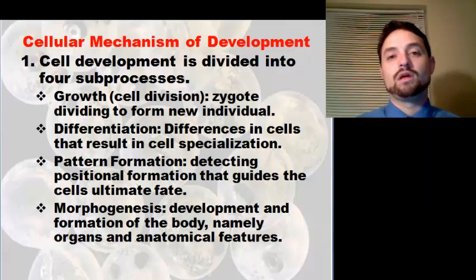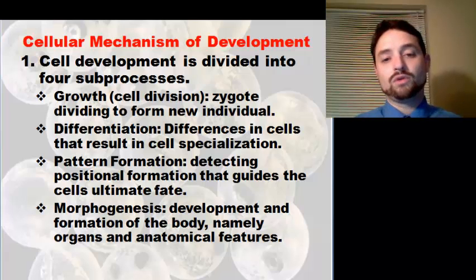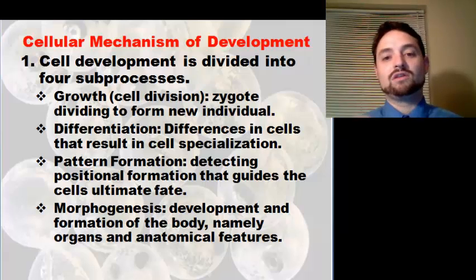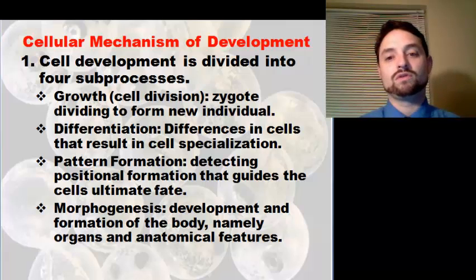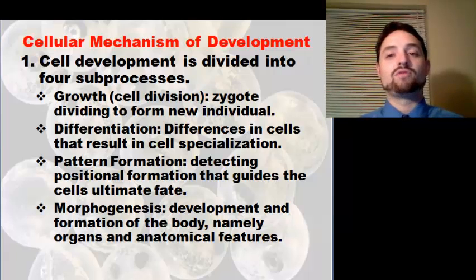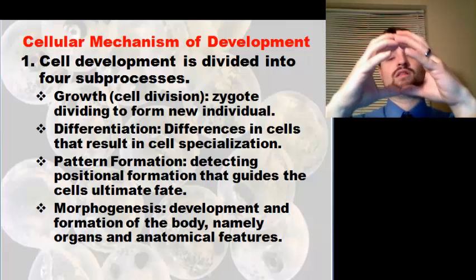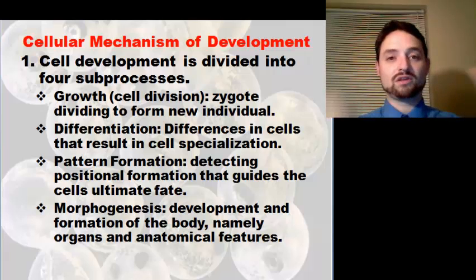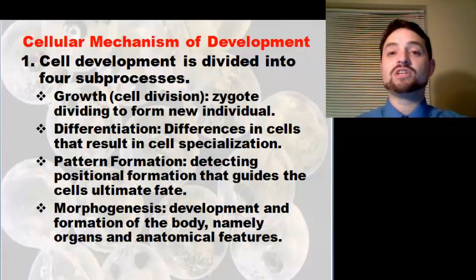Starting from that one cell, development is divided into four subprocesses. The first is growth — cellular division where the zygote divides to form new individuals. This is the very first thing that has to happen. You start with one fertilized egg and end up with a multicellular organism, so growth is obviously one of the steps that takes place.